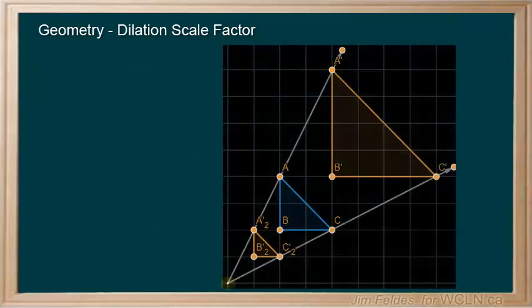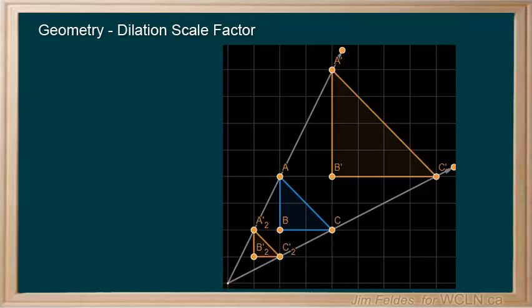This last image shows how a point can be used to generate lines that would show our images at many different magnifications. Once again something to try with geometry graphing software.